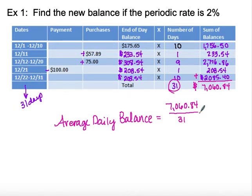That gives us about $227.77 as our average daily balance. You can see that it's not just on the unpaid portion — it's on your average daily balance.